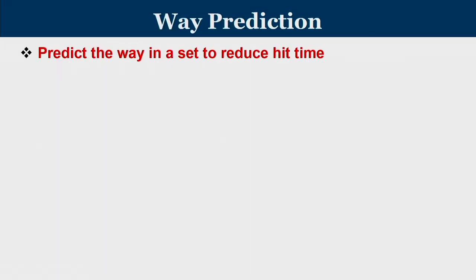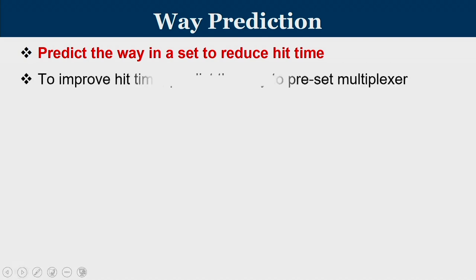We are going to learn about a new technique known as way prediction — predict the way in a set to reduce the hit time. Direct mapped caches have the lowest hit time because only one way of a given set is operated on, and if it is a hit the corresponding data is extracted.